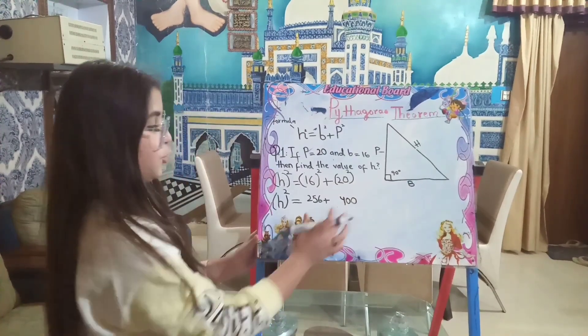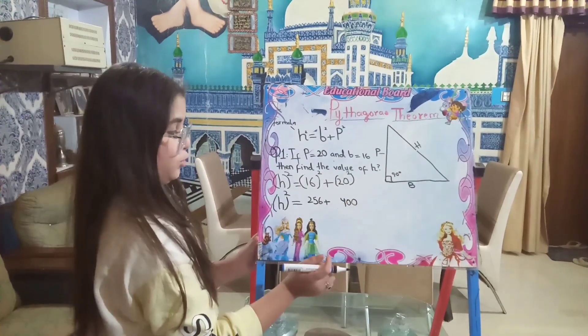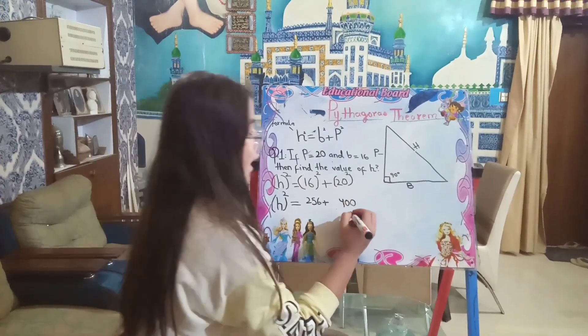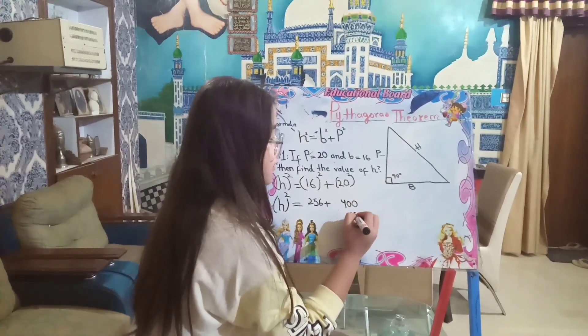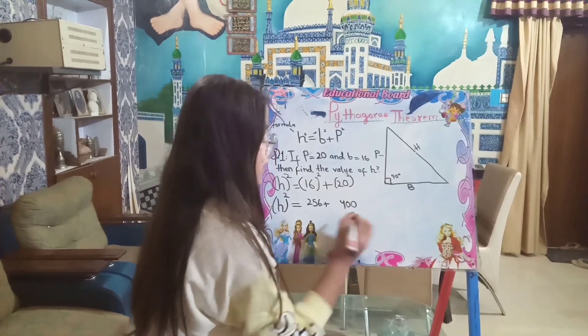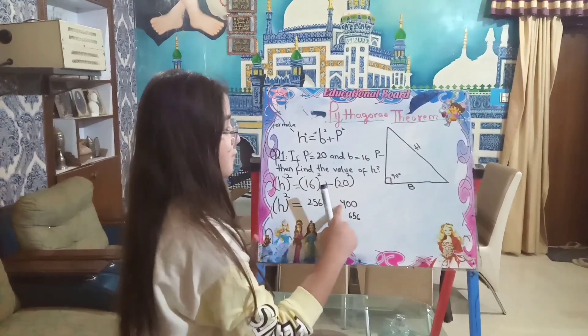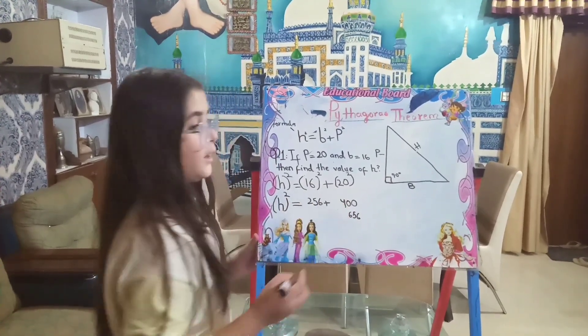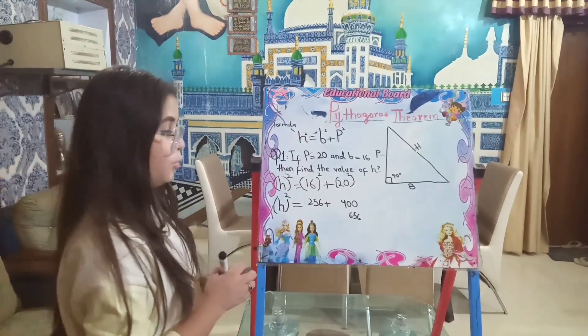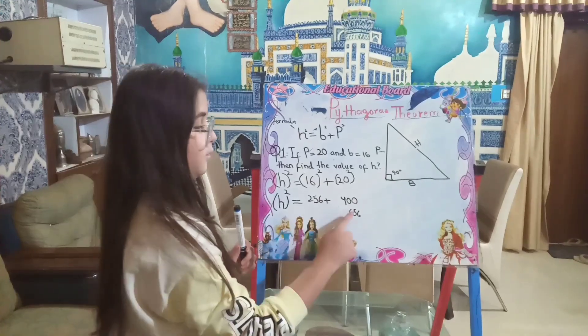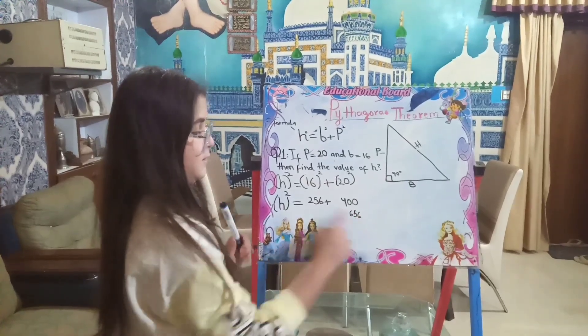Now we have to add these both. The answer will be 656 when we add 256 and 400. Now we will find out the square root of 656.